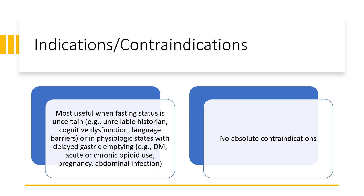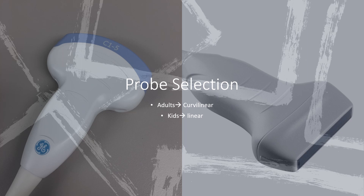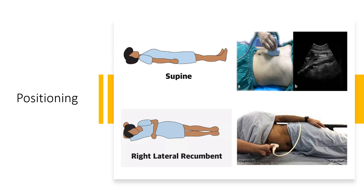There are no absolute contraindications to the procedure. However, if a patient has an abdominal wound, an epigastric bandage, or cannot be safely positioned in the right lateral decubitus position, those are relative contraindications. To get the best picture, for adults you can use the low-frequency curvilinear probe in the abdominal setting, and for kids or adults less than 40 kilograms you can use the linear probe in the vascular setting.